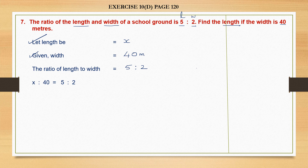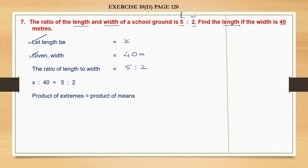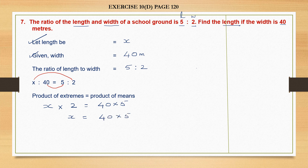Now we have it in the form of a proportion. Once you have it in the form of a proportion, we use the formula: product of extremes equals product of means. x and 2 are the extremes and 40 and 5 are the means. Product means multiplication. So let's find the product of extremes: x into 2 is equal to 40 into 5. So we can find the value of x — 40 into 5 — and take 2 to the other side as division.